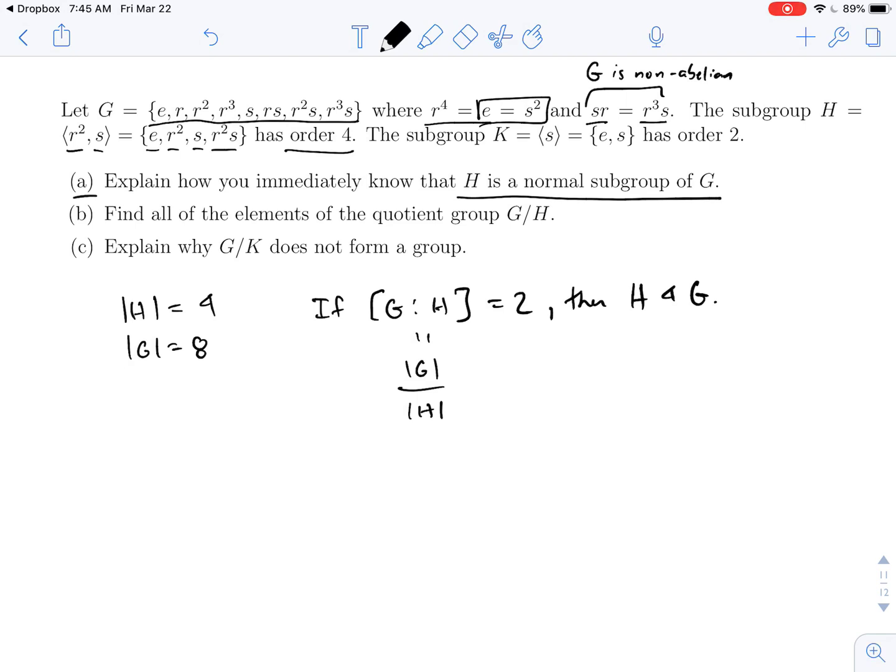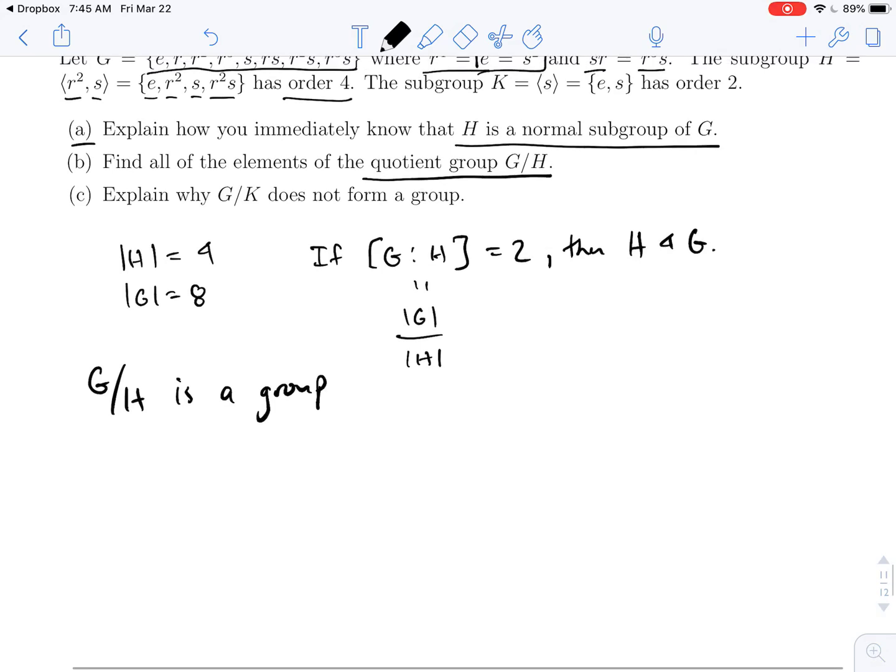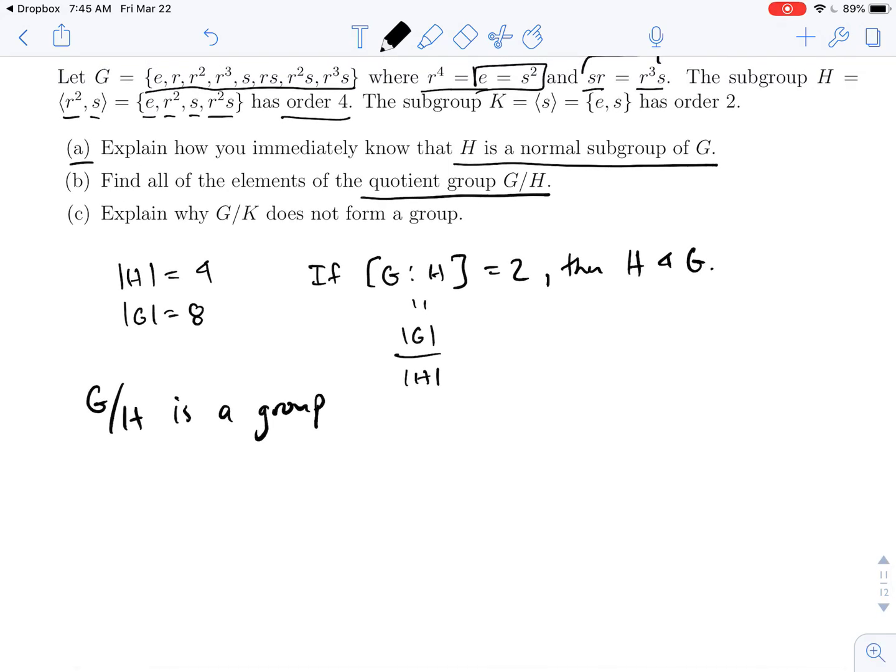How about B? B says we want to find all the elements of the quotient group G mod H. Well, once we know H is normal, then we actually know G mod H is a group. So we have this quotient group, and we want to find all the elements of it. So first thing, by Lagrange's theorem, the number of elements in the quotient group is just equal to the index. So the size of G mod H is equal to the index of G mod H, which is equal to two. So this will be a group with just two elements.